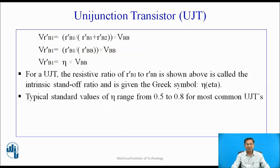For a UJT, the resistive ratio of R'B1 to R'Bb is called the intrinsic standoff ratio, given the Greek symbol eta (η). Typical standard values of η range from 0.5 to 0.8 for most common UJTs.